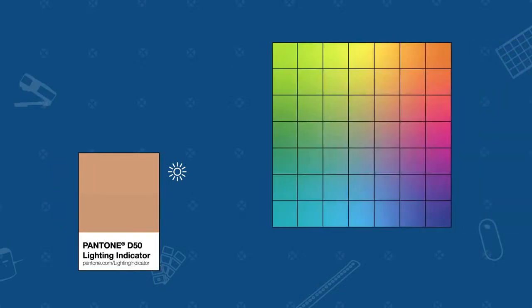Here we have a Pantone D50 lighting indicator. Under daylight, we can visually see that the color on the top half and the bottom half closely match. If we measure and plot both halves in CLAB, the two colors appear identical and the numerical color difference is very small.